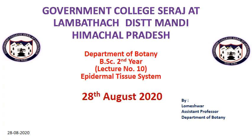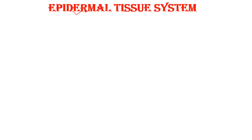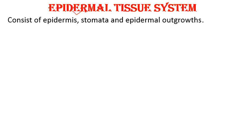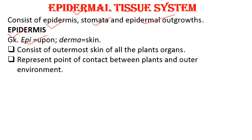Good morning everyone. Today we will discuss the epidermal tissue system. The epidermal tissue system consists of epidermis and its associated structures, including stomata and trichomes. The term 'epi' means upon and 'dermis' means skin, so epidermis is a protective covering over the internal tissues. It covers the outermost layer of all plant organs, including vegetative as well as reproductive structures.